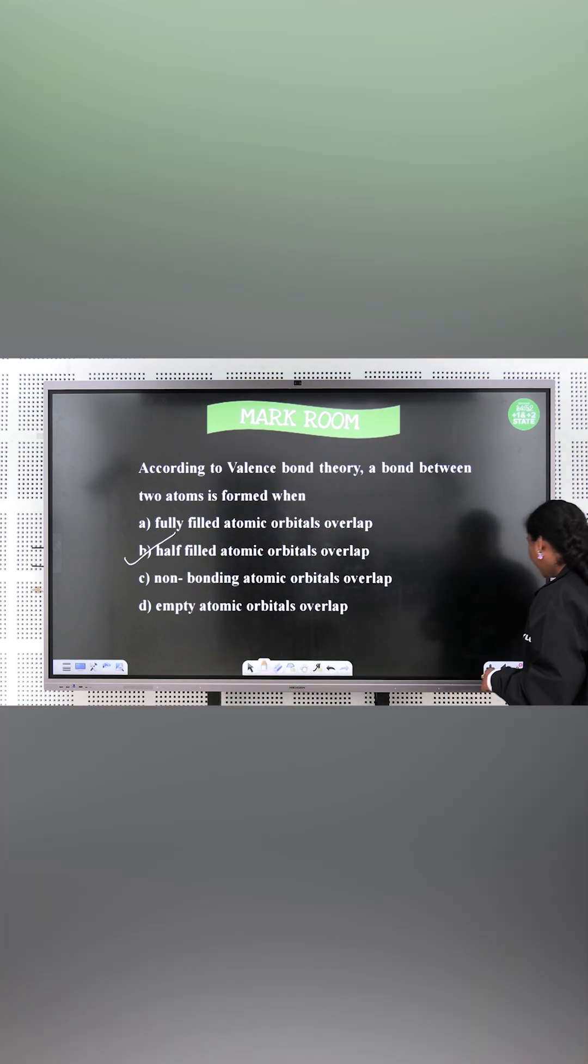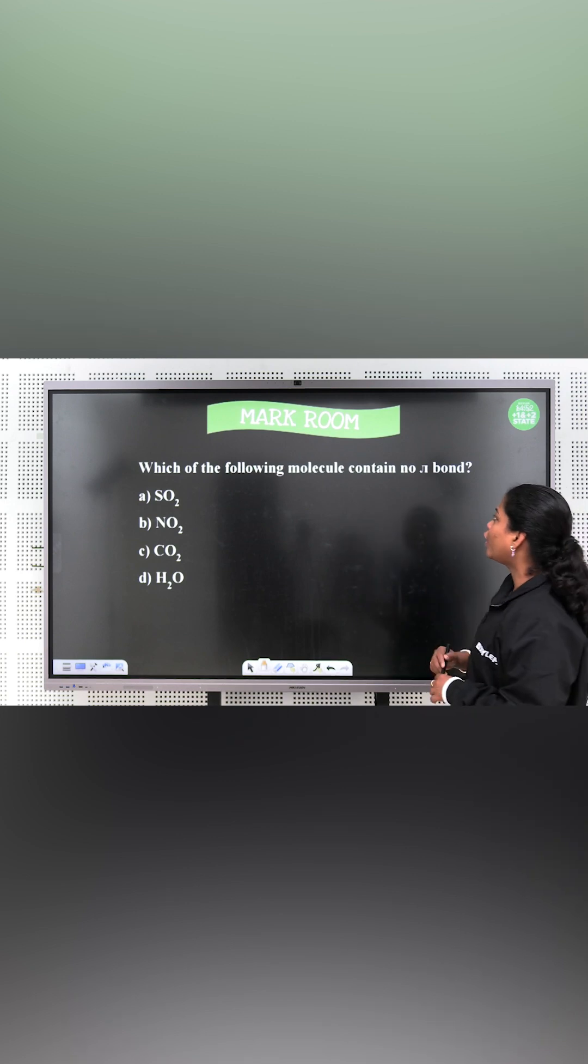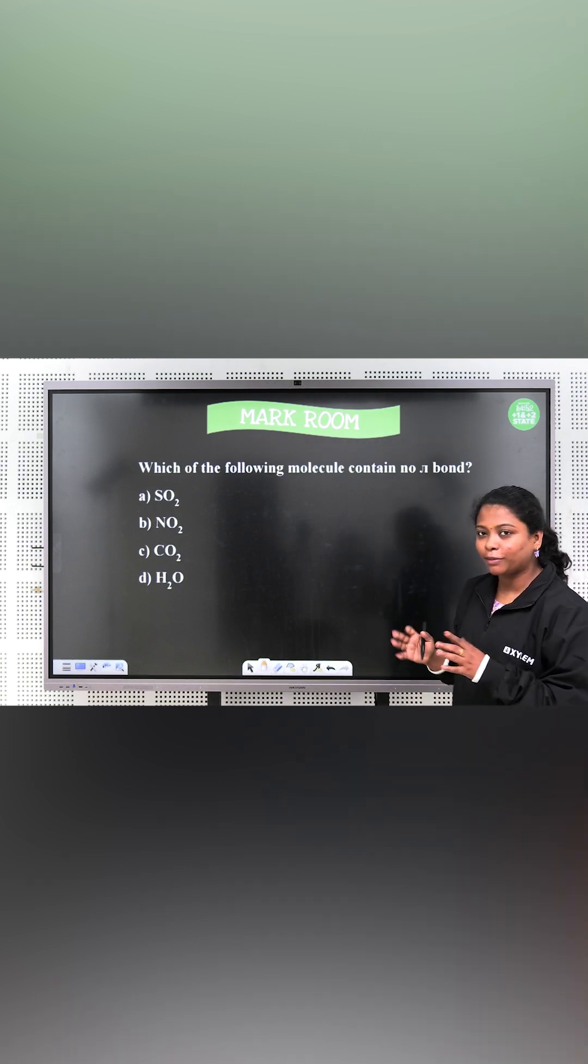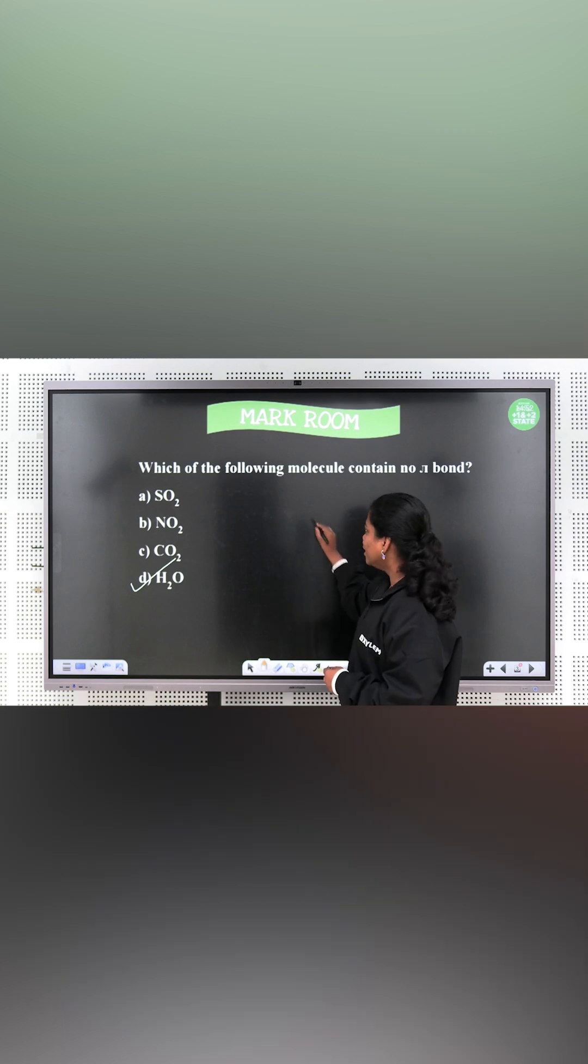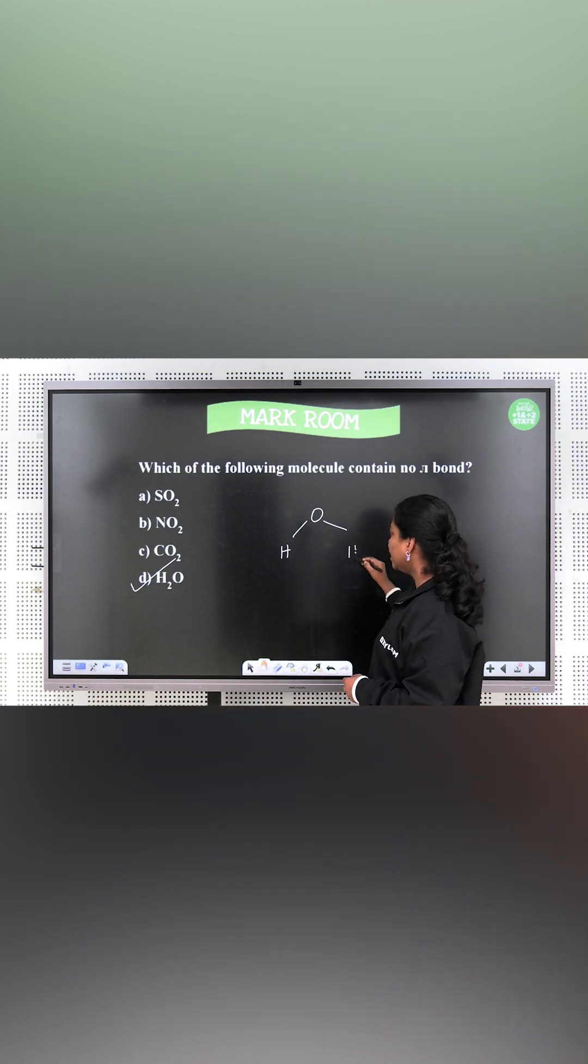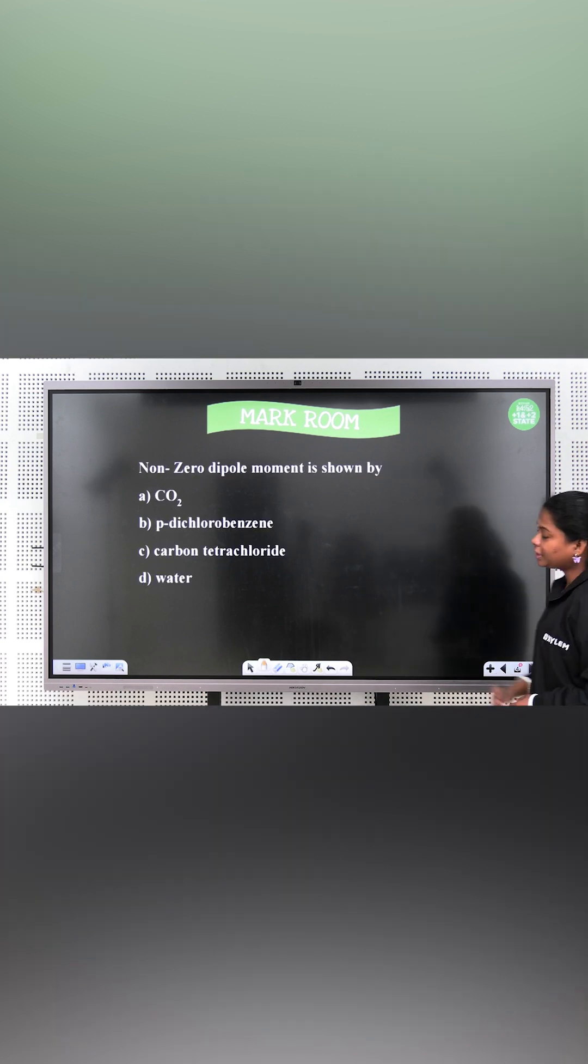Moving to the next question. Which of the following molecule contains no pi bond? Yes, in the structure we are going to show you water. Correct? So oxygen and then hydrogen and hydrogen. So double bond, then pi bond is going to be.